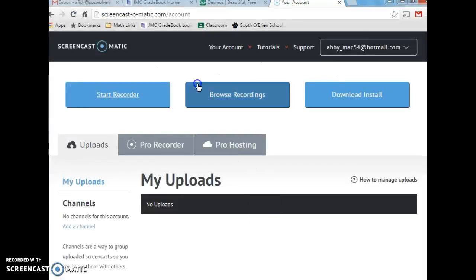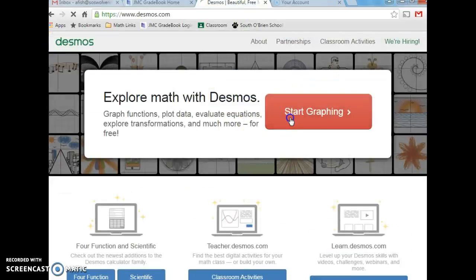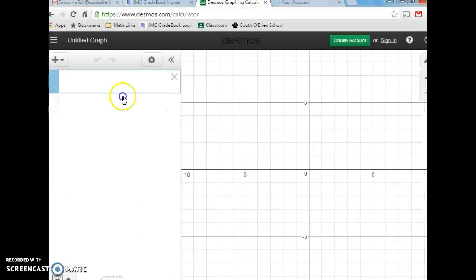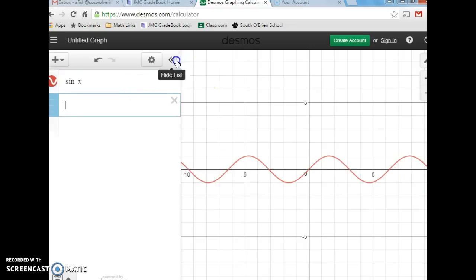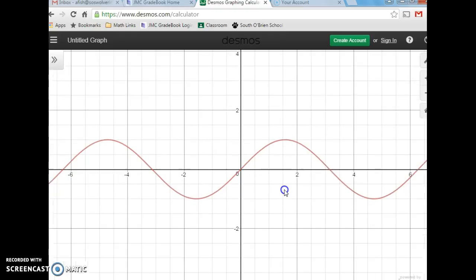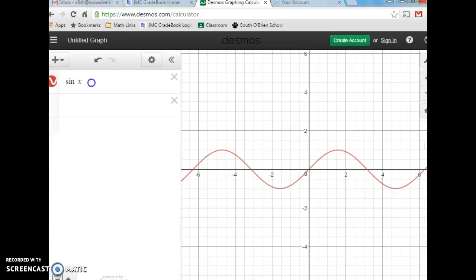So if I'm looking at Desmos here, and I've got the sine of x. Now when I'm looking at this, I can see that it starts at zero. And these values don't necessarily match up. And the reason why they don't necessarily match up is because they're doing the graph of sine in radians.